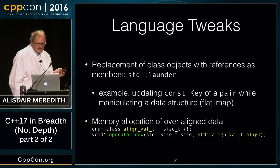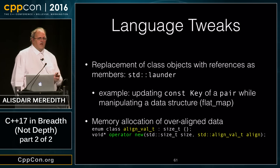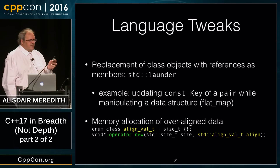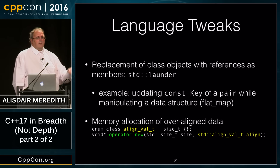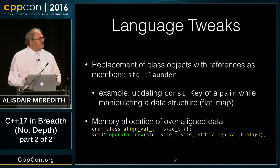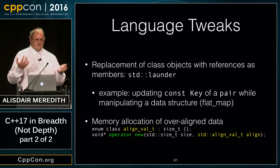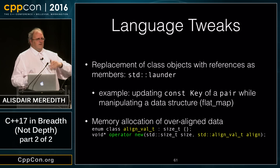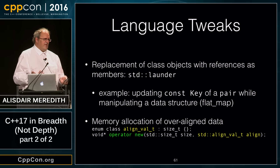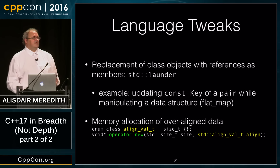Moving to the library: we have a function, std::launder, that's effectively a no-op but gives the compiler information about object lifetimes. In obscure corner cases when building advanced data structures, you get into issues about type safety — for example, destroying an object in place and recreating another on top of it — and you need to hint to the compiler not to assume undefined behavior from the type system abuse.